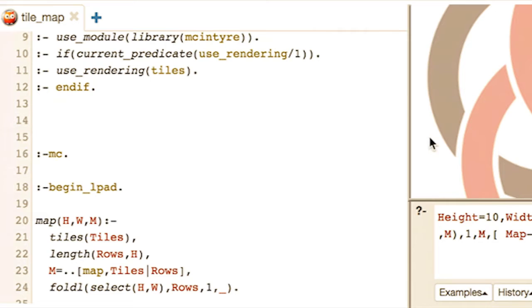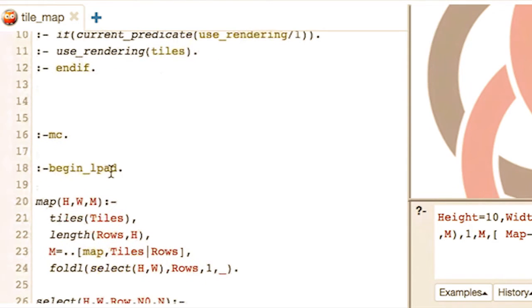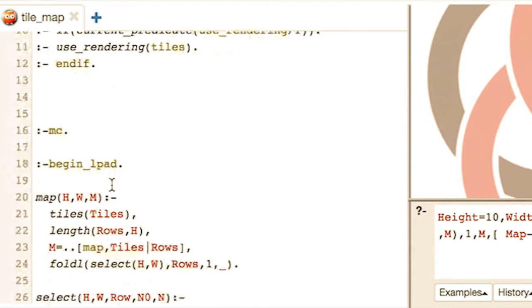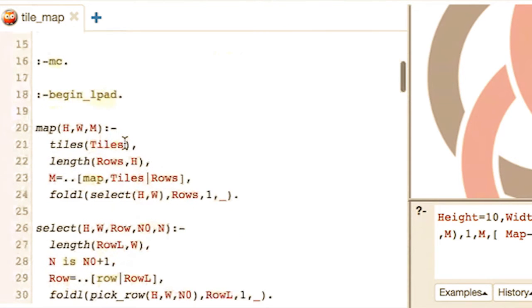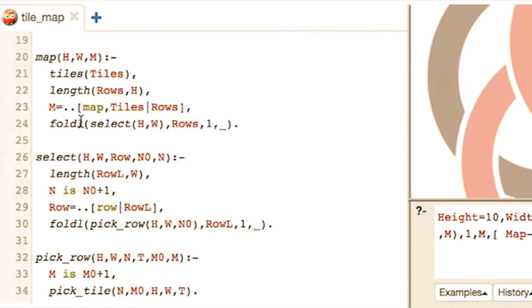So we need this library because we are going to generate maps by taking samples. In particular, the map will be generated by taking one sample from a program. The program is here. So you first have to include the directory MC, which means that the following code should be interpreted by McIntyre. Then you have a directive to denote the beginning of the probabilistic program. As you can see, it uses the Foldel predicate, which is an aggregate predicate. This Foldel predicate calls this predicate select, which selects rows from row one to the number of rows, which is eight.